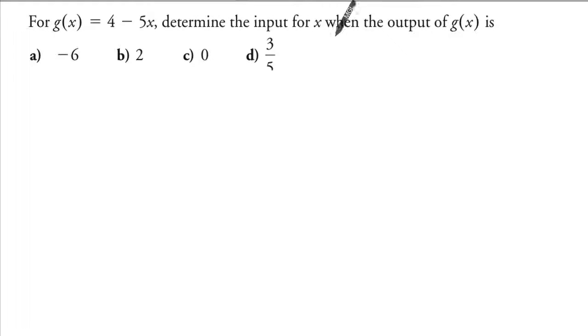To determine the x value when g(x) is, for part a, this is g(x), the output is -6. So it's asking you to solve this equation. For part a, x is equal to 2.